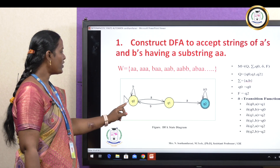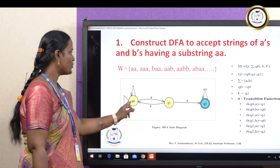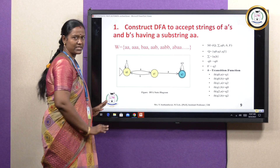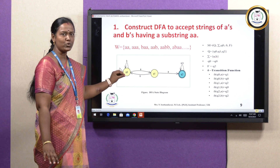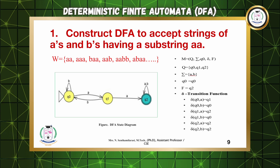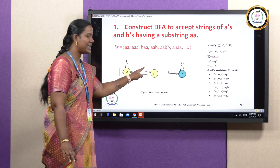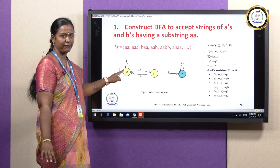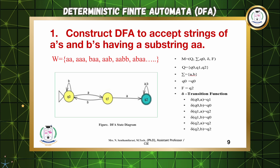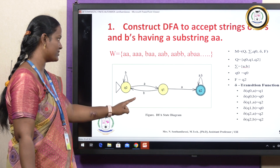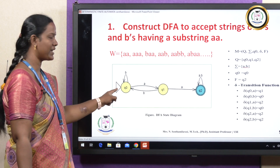Starting from Q naught — since AA is compulsory, Q naught on input A moves to Q1, and Q1 on input A moves to Q2. This path is compulsory. But in DFA, all inputs for each state must be covered. From Q naught, on input B, it stays as a self-loop back to Q naught. For example, the string BAA: from Q naught on B returns to Q naught, then on A goes to Q1. So Q naught on A goes to Q1, Q naught on B goes to Q naught.